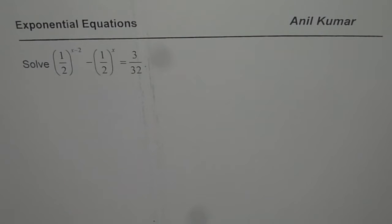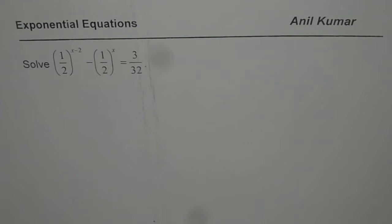I am Anil Kumar and now let us understand how to solve exponential equations which involve fractions. The question here is: one-half to the power of x minus 2, minus one-half to the power of x, equals 3 over 32.